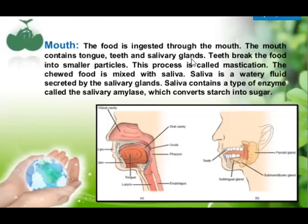What is the work of teeth? Teeth break the food into smaller particles. The food which we eat is in solid form and the pieces are bigger, so the teeth break the food into smaller particles, and this process is known as mastication.